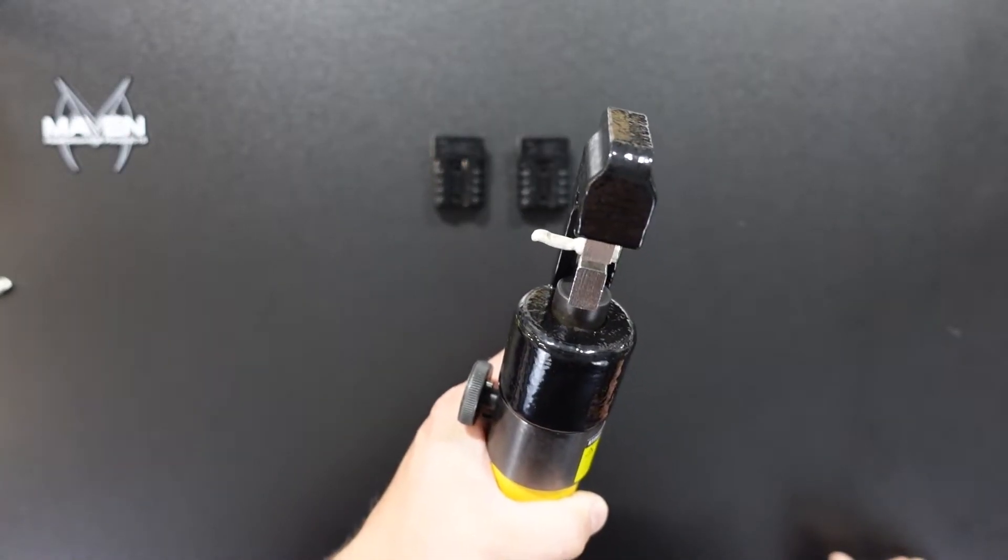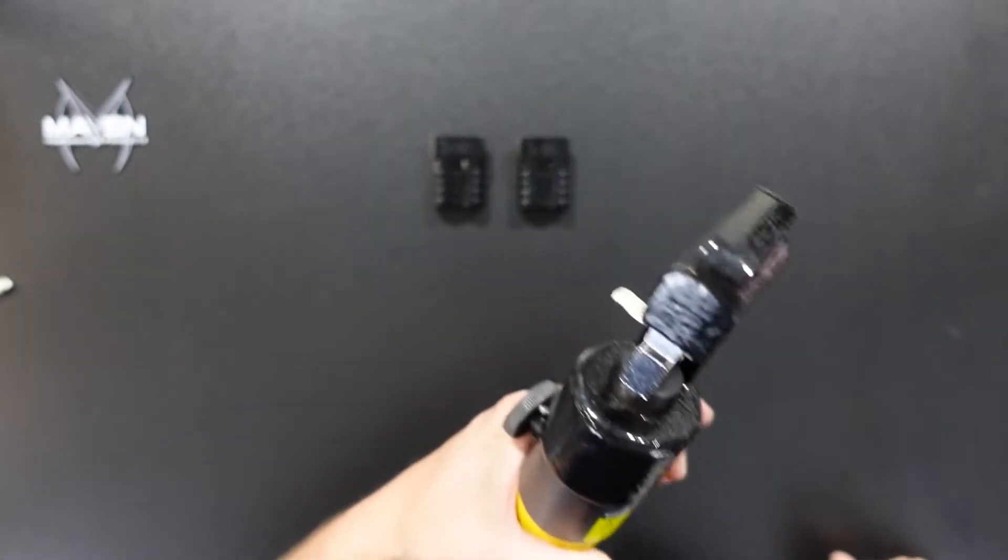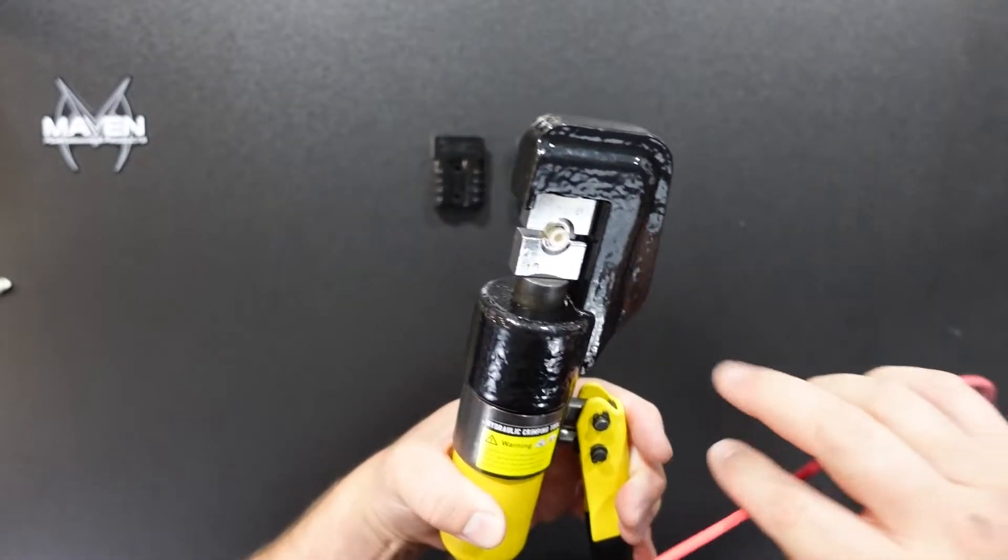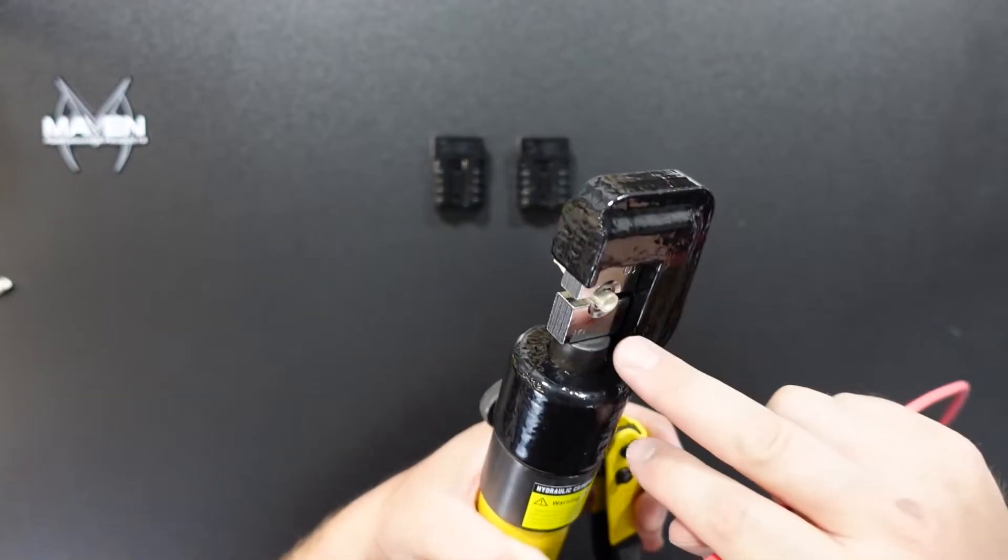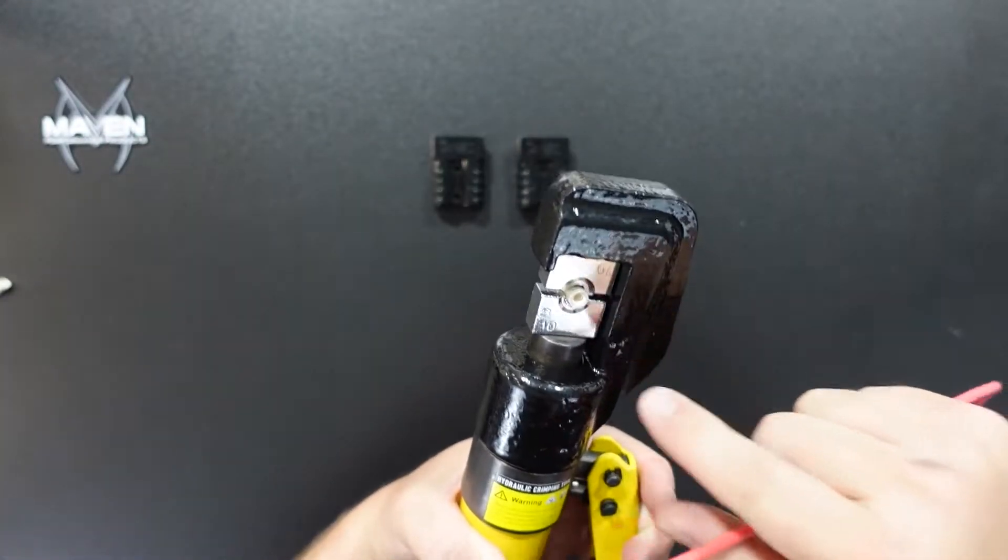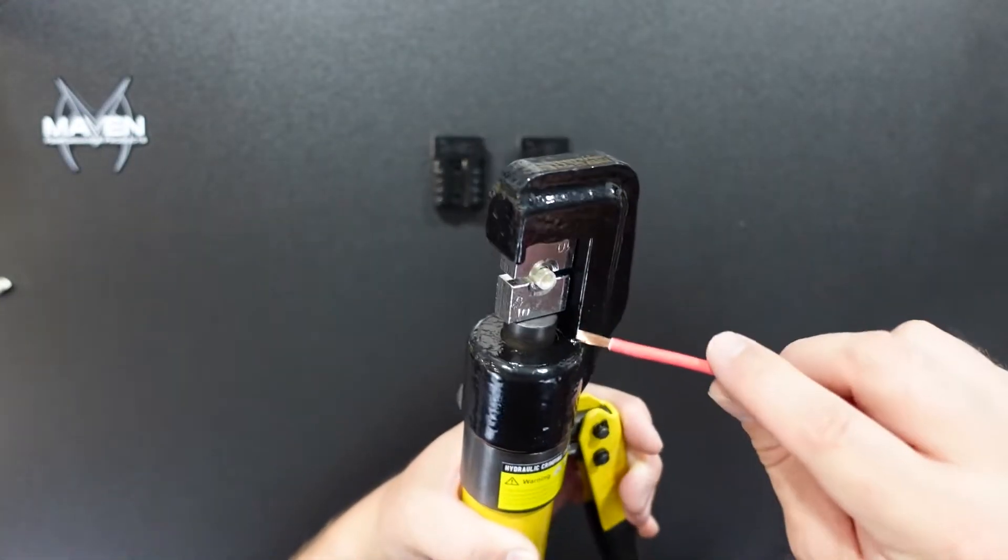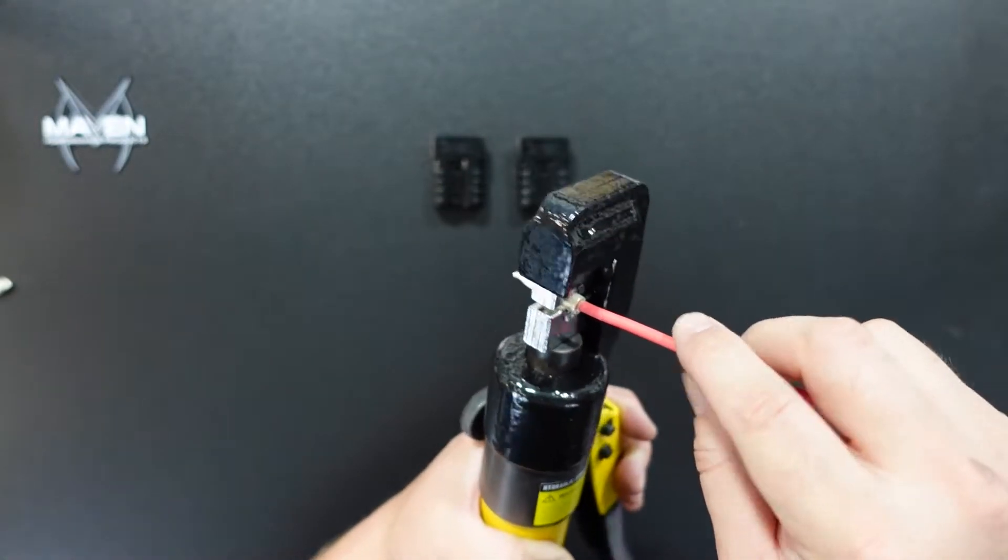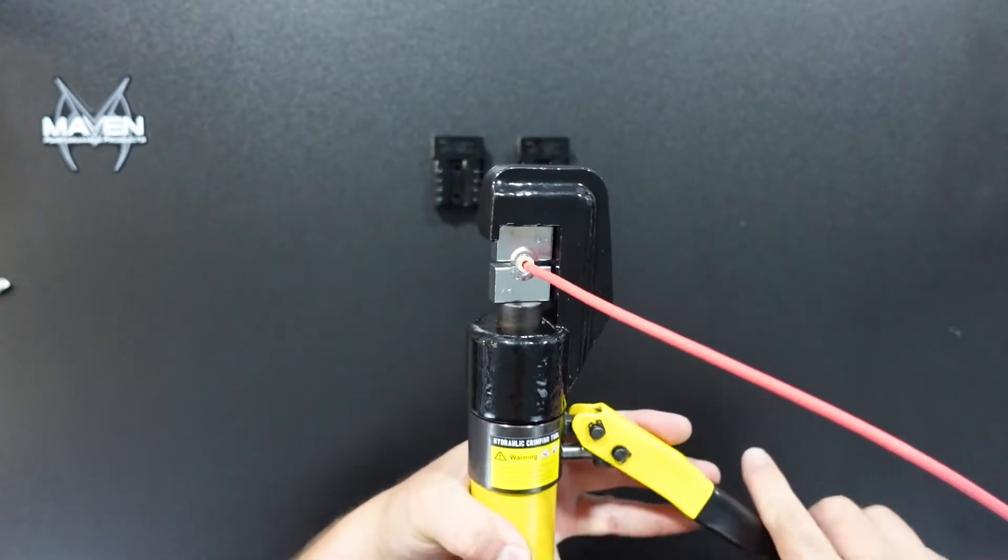We're going to go ahead and use our hydraulic crimpers, handheld hydraulic crimpers. In this case, we found that the size 10 here fits pretty good. A lot of times these are in millimeters squared. It just happens to be a 10, and we've kind of done that for some testing of different things.